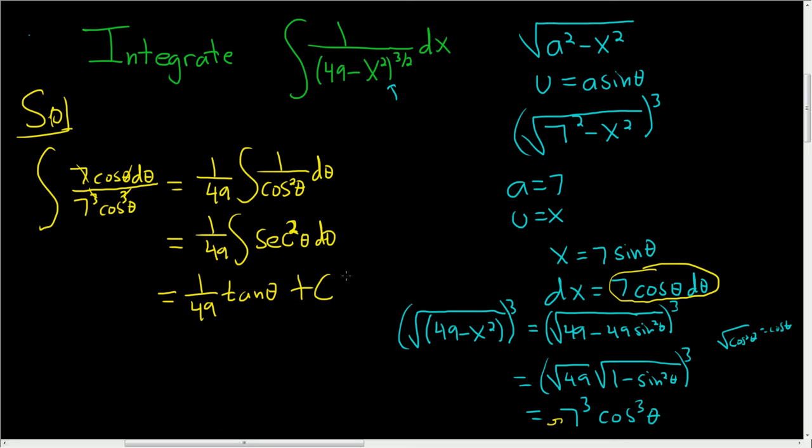So now we're going to use our original substitution, this one here, to create a triangle so that we can find out what tangent of theta is. So if x is equal to 7 sine theta, that means that sine theta is equal to x over 7. And using the power of SOHCAHTOA,